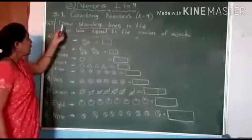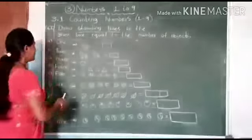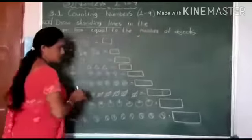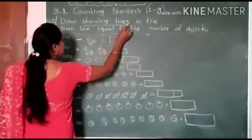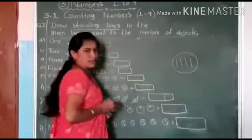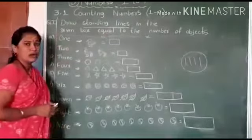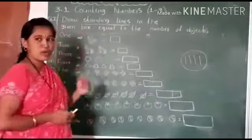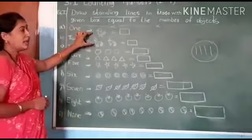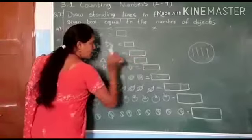Question number 1: draw standing lines in the given box equal to the number of objects. Listen here children — draw standing lines in the given box equal to the number of objects. You can see here, a standing line is like this length — we will call it a standing line. I have already drawn some objects on the board. You should count these objects, then draw standing lines equal to how many objects there are.